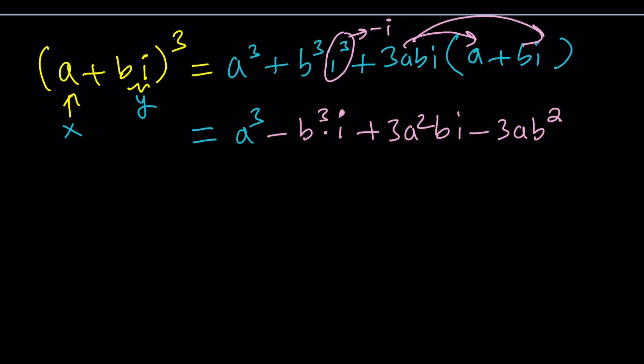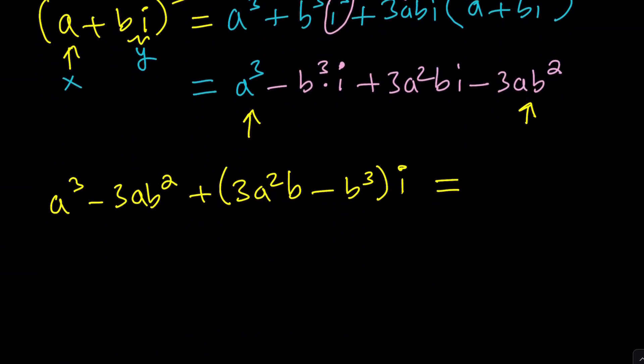So this is equal to that. Next, we're going to go ahead and put the real parts together. a cubed minus 3ab squared. That's the real part. And the imaginary part is 3a squared b minus b cubed times i. And that is equal to 1.